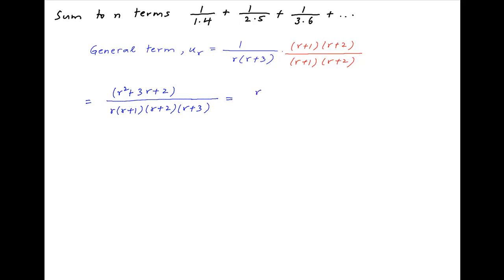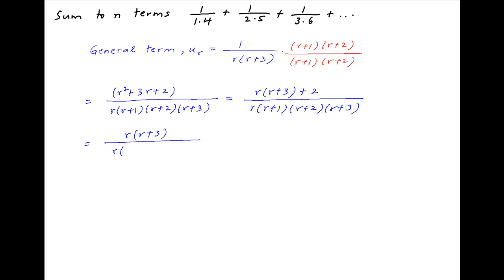This can be written as r times (r + 3) + 2 in the numerator, and the denominator is r times (r + 1) times (r + 2) times (r + 3). u_r can therefore be expressed as a sum of two components: the first component is r(r + 3) divided by r(r + 1)(r + 2)(r + 3), and the second component is 2 divided by r(r + 1)(r + 2)(r + 3).